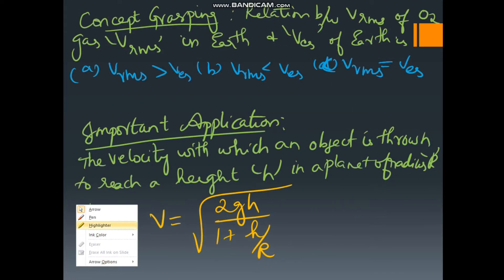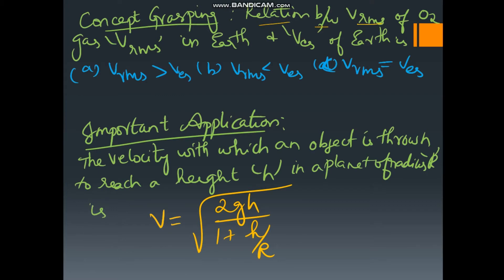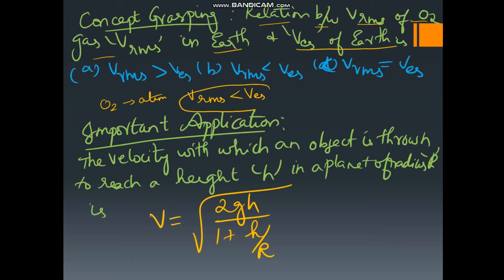Now let us see one concept: the relation between v_rms of oxygen gas on Earth and the escape velocity of Earth. Oxygen is present in the atmosphere of Earth because its rms speed is less than v_escape. So v_rms is less than v_escape — this is why oxygen remains in Earth's atmosphere.